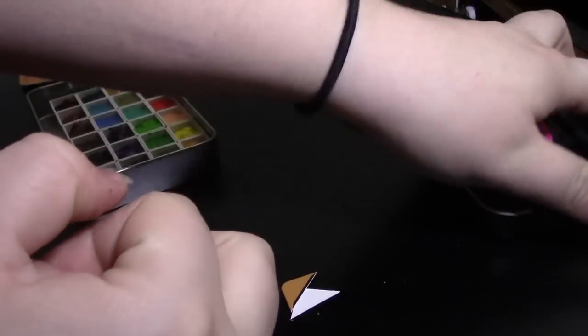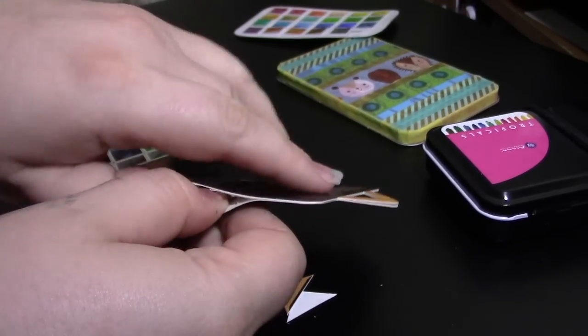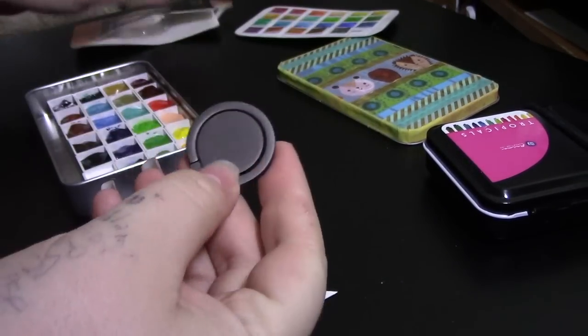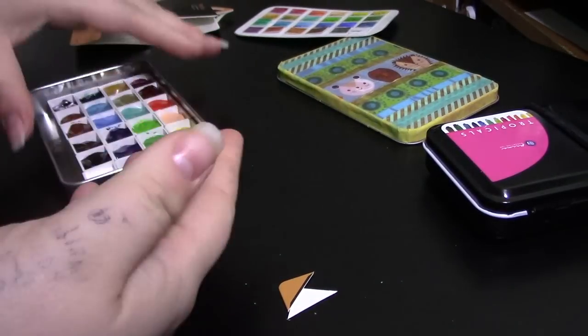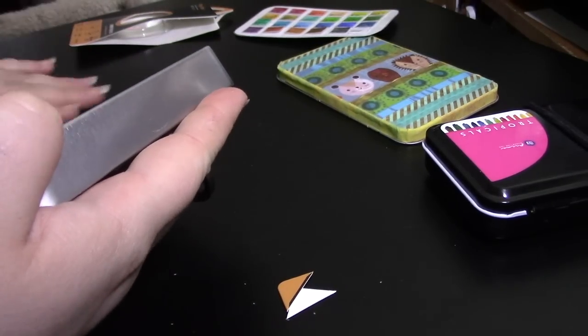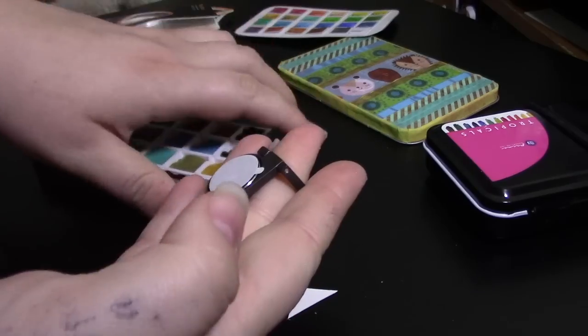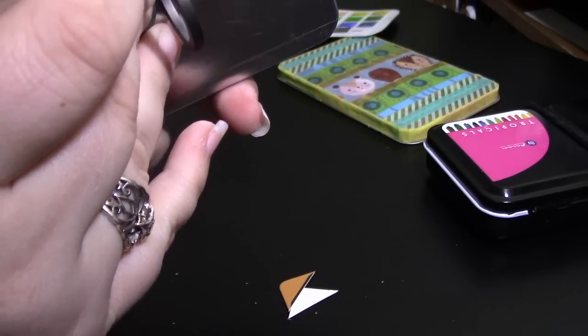One last trick. Most travel palettes have a thumb ring on the bottom of them to help you hold onto the palette a bit easier. To imitate this, I've been using cell phone finger rings. You can buy these at 5 Below sometimes, but they also sell them on Amazon in a multi-pack if you're a palette person like me.